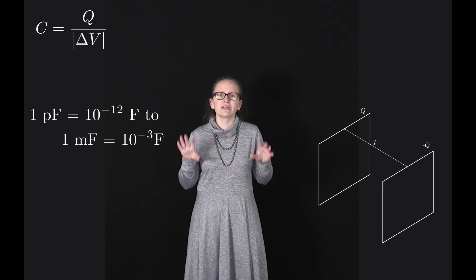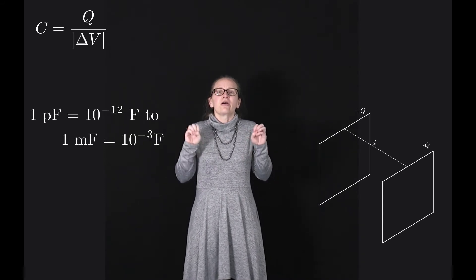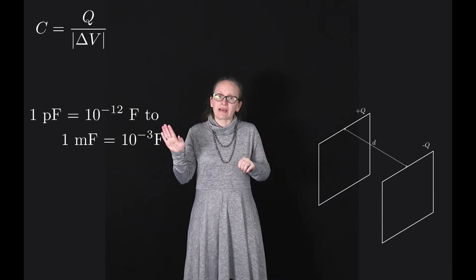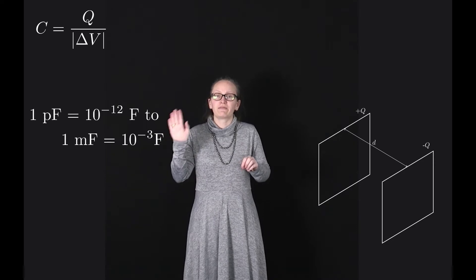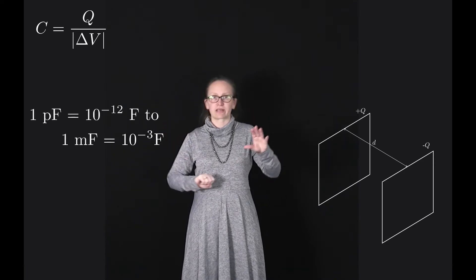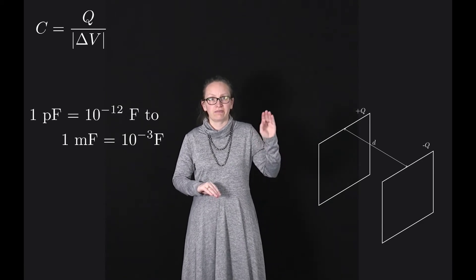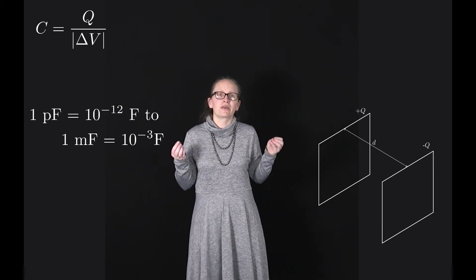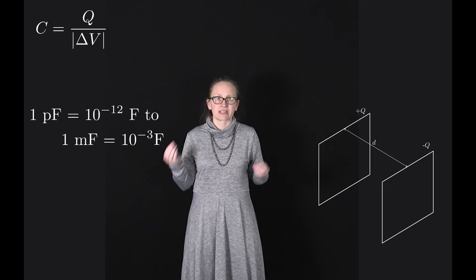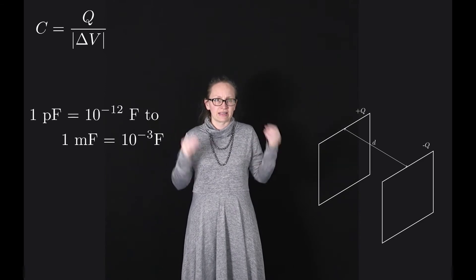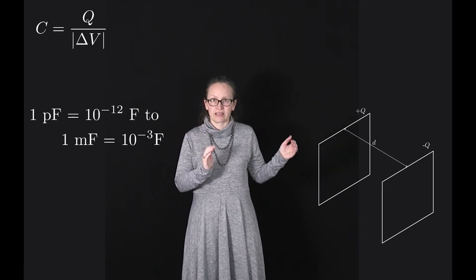Typical values for capacitance range from 1 picofarad, which is 10 to the minus 12 farads, up to a large capacitance, which is 1 millifarad, 10 to the minus 3 farads. The value of the capacitance actually depends upon the size, shape, and separation of the conductors.